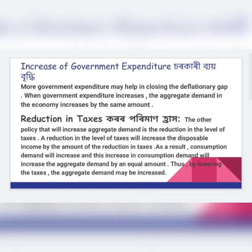If government expenditure is increased, then people's income increases. When people's income increases, people's demand will increase, and then the aggregate demand of the economy will increase.